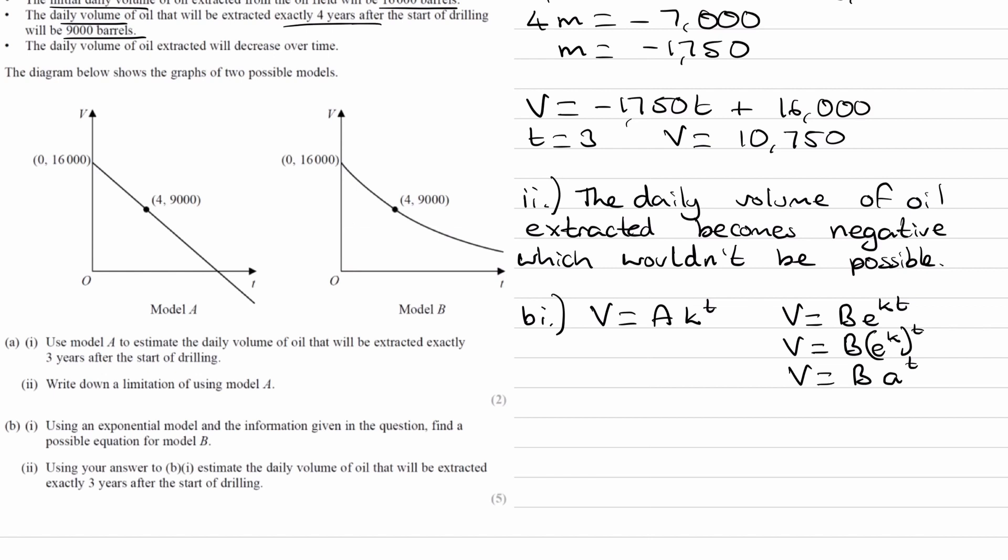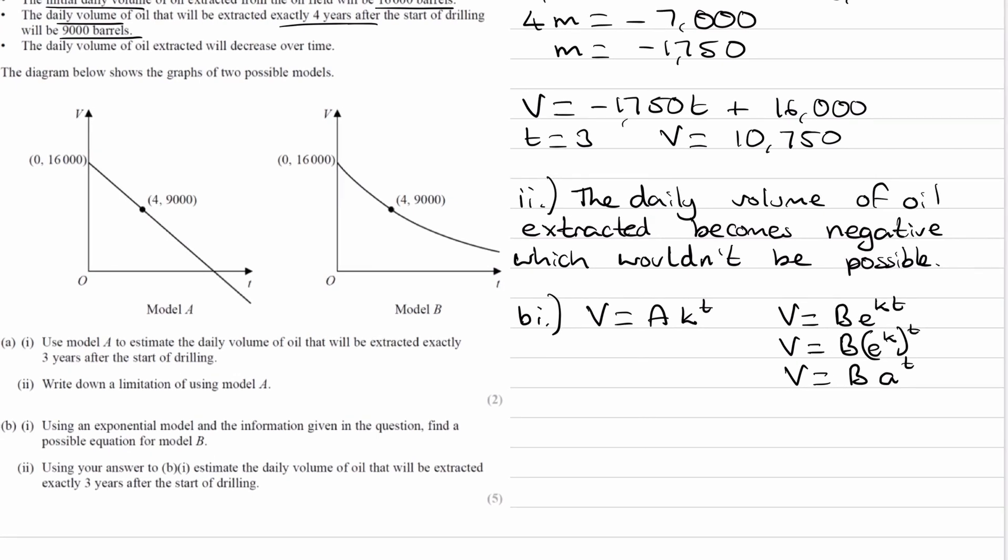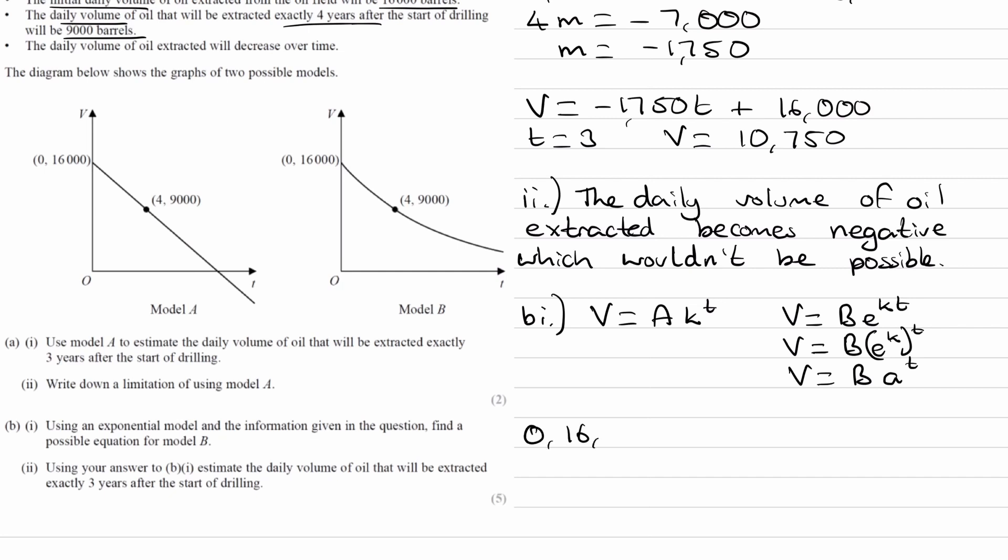I'll use the first one, a times k to the power of t. I'll put in our numbers. When t is 0, V is 16,000. So 16,000 equals a times k to the power of 0, which is just a. So a is 16,000.